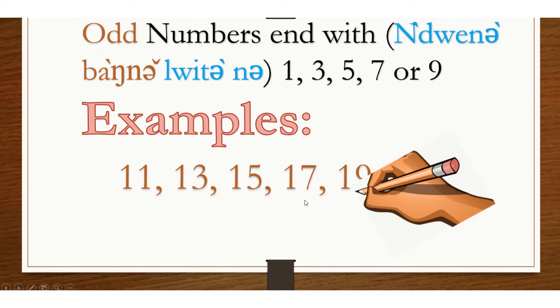Any number, no matter how large, when it ends with 1, 3, 5, 7, or 9, that number is odd.